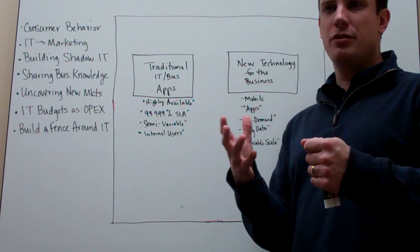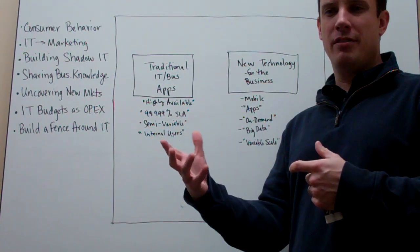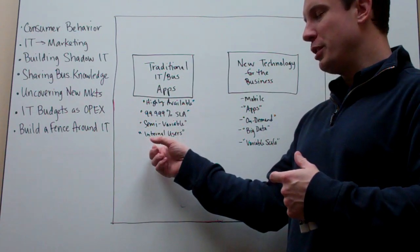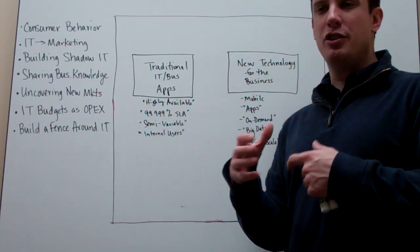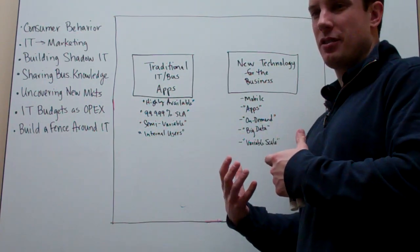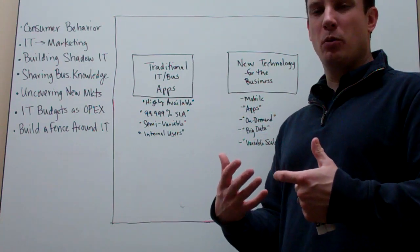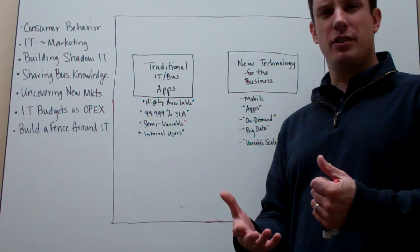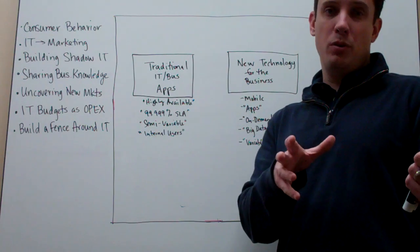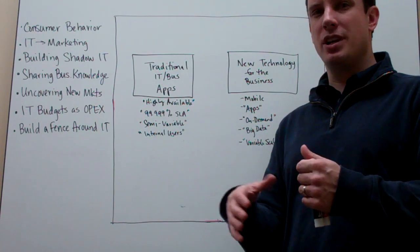And so this sort of dual frustration where they don't have free cycles because they're helping you run the steady state of your business and you wanting them to go faster but not being able to budget for it starts to create some frustration, both for you as a business manager as well as for the IT organization.